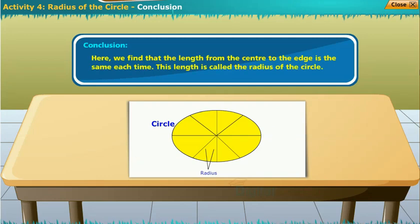Conclusion: Here we find that the length from the center to the edge is the same each time. This length is called the radius of the circle.